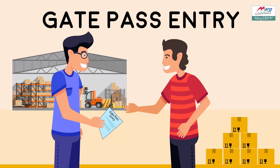In the distribution business, products are regularly received but many times products are delivered before the bill is received — meaning products against which the order is received are delivered to the retailer. Due to not receiving the bill, the purchase entry is not created, which increases the chances of stock mismatch. You will not know in which bill a particular item was received and sold, and if any bill is missed, it will not be found during an audit or while reconciling GSTR.